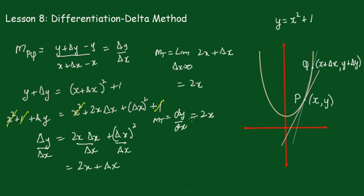If you've got a specific point, say the point (2, 5), we simply put in 2 for x and we get dy/dx = 2 × 2 = 4. That is the gradient of the tangent at the point P, and that's the same as f'(x) — exactly the same thing, just a different way of expressing it.